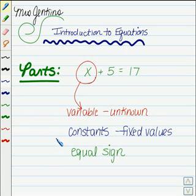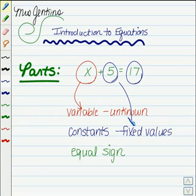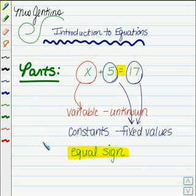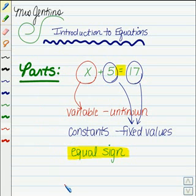Another thing that's found in equations are constants — just numbers, values that are fixed and don't change. In this equation here, that would be the 5 and the 17. Now, every equation has to have an equal sign. That shows that your equation is perfectly balanced — it's like a scale. The one side equals the other side. X plus 5 equals 17.